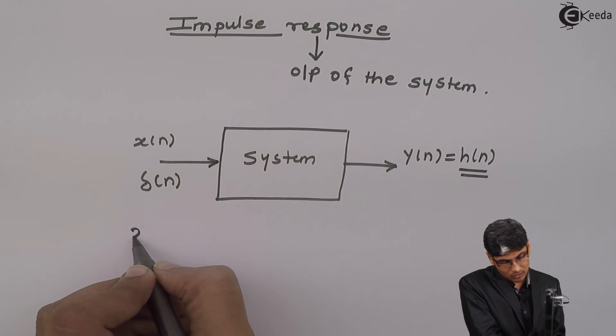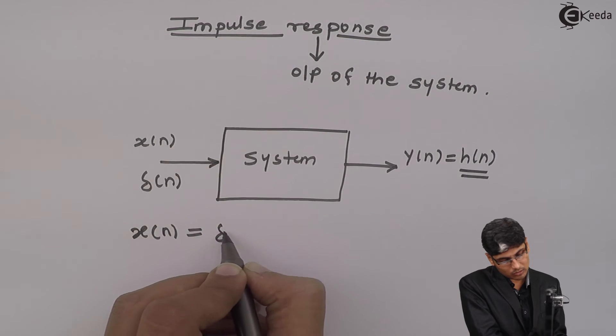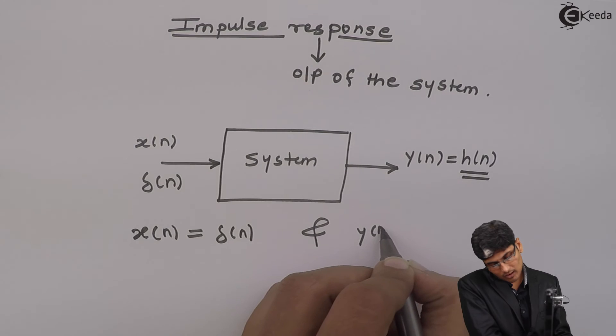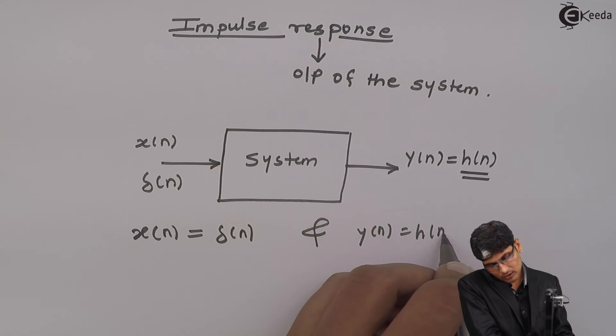My x of n in this situation will be equal to delta n and my output y of n will be equal to h of n.